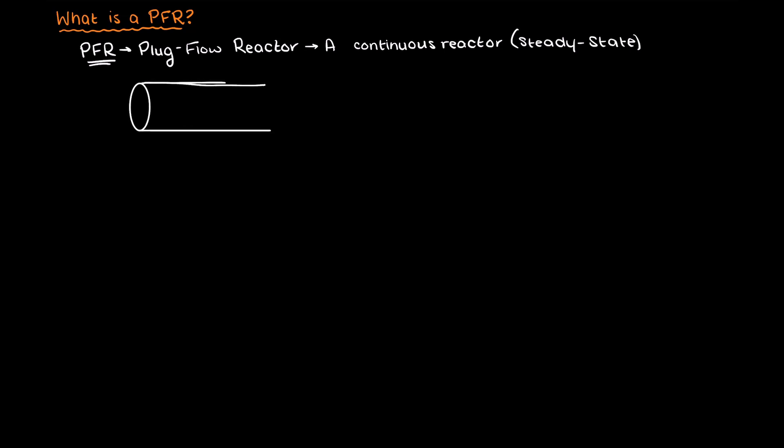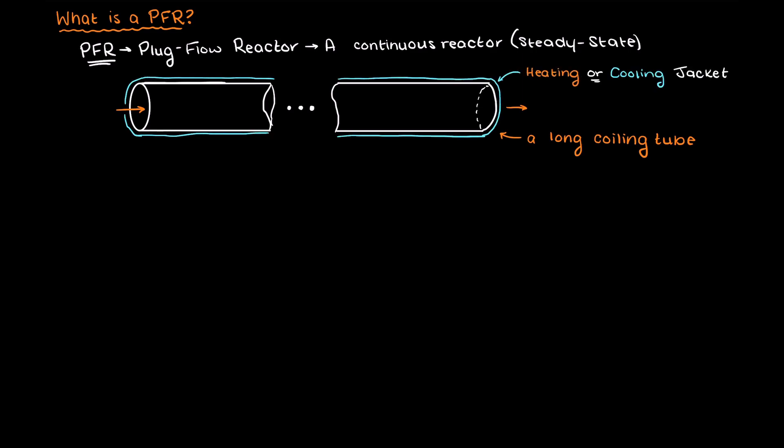Well, what does a PFR look like? PFRs are commonly a long coiling tube in which there is a reacting component. Commonly we also have a heating or cooling jacket around the reactor, this is to manage the temperature of the system. Which of the two jackets is used will depend on the reaction occurring and whether it is exothermic or endothermic.